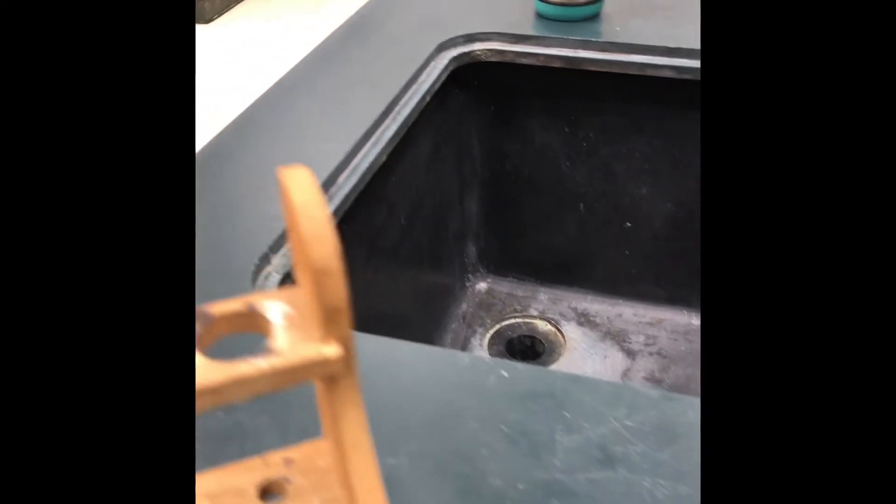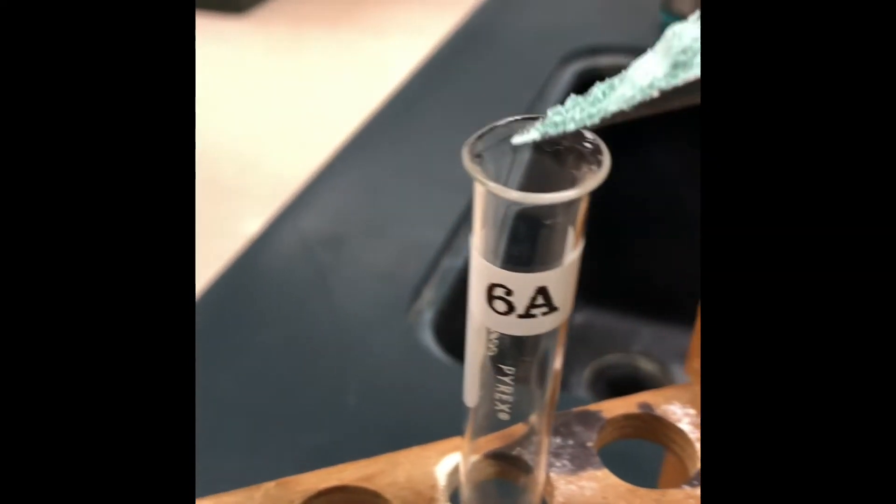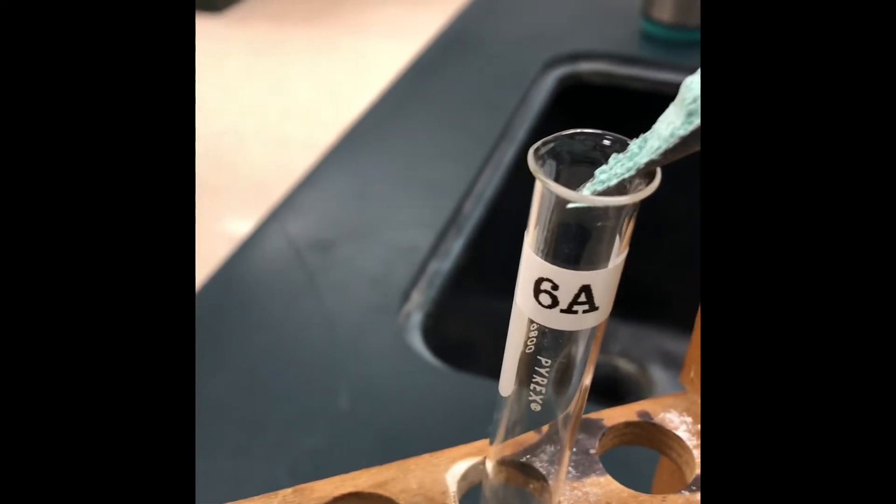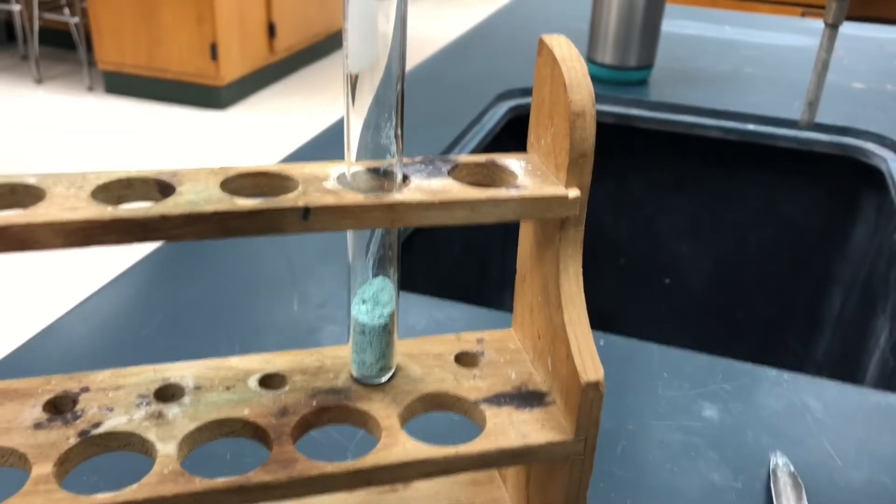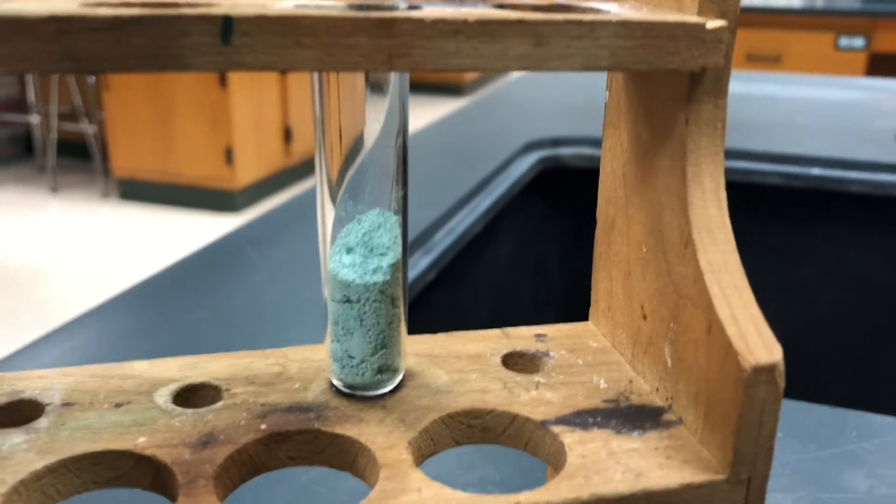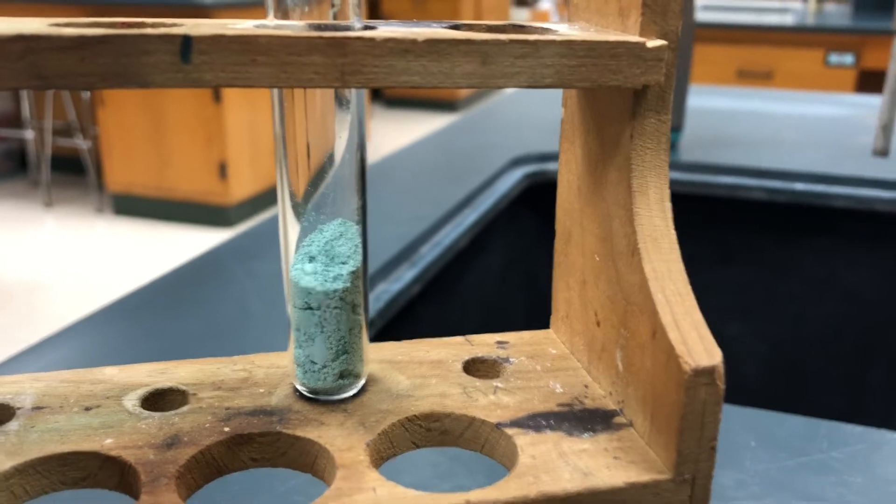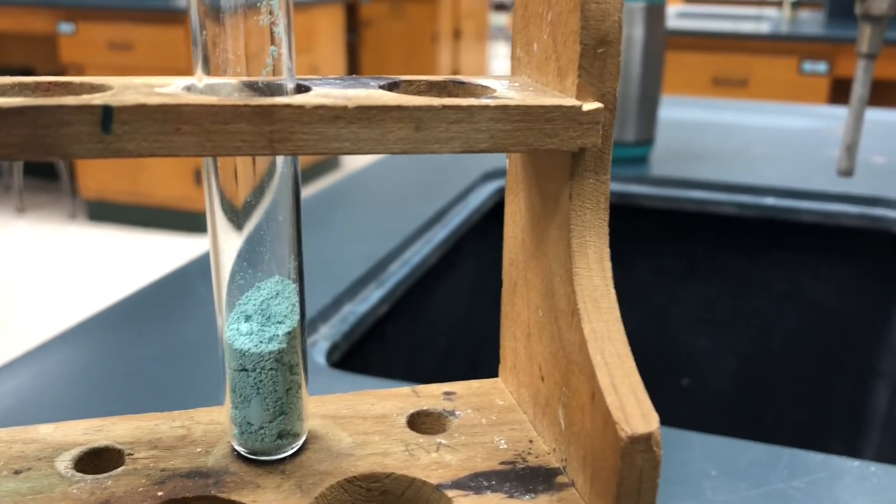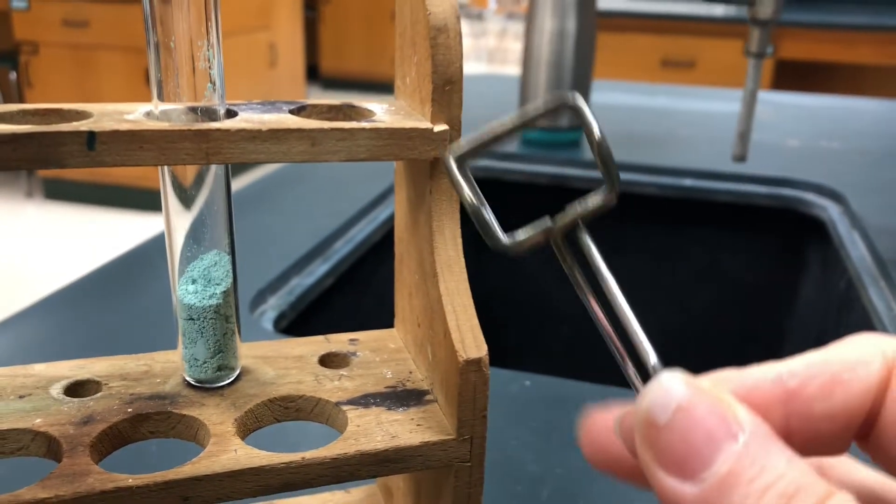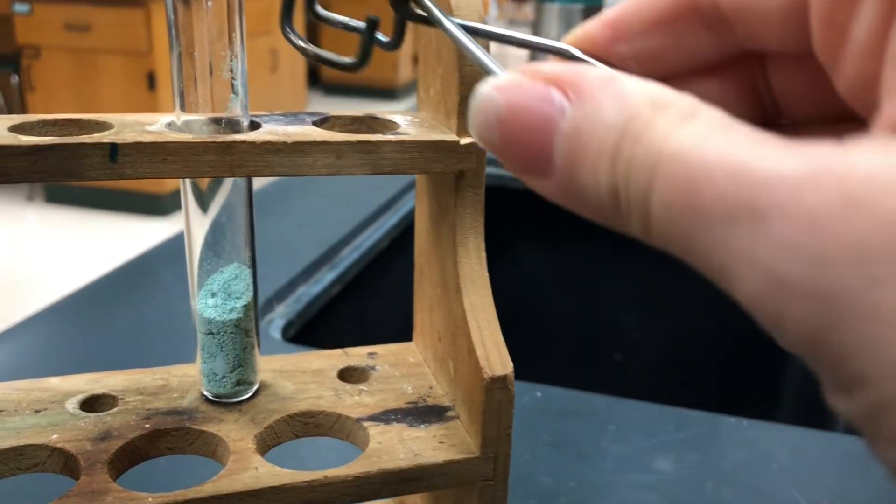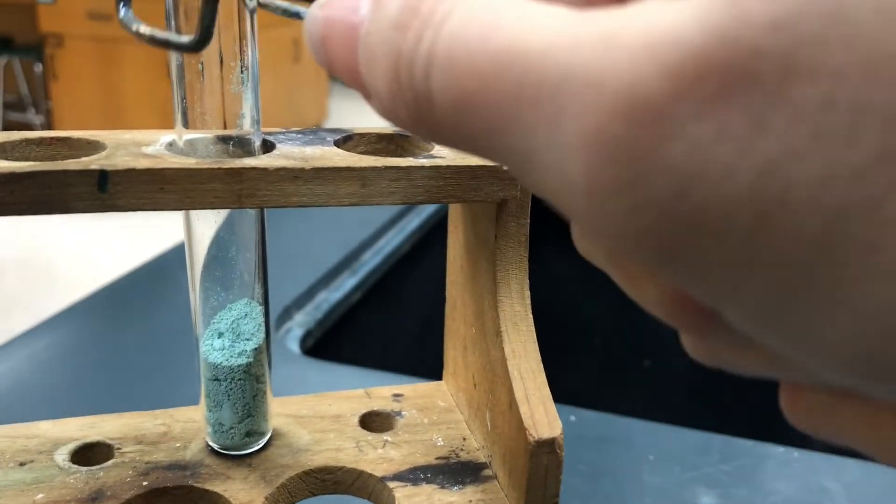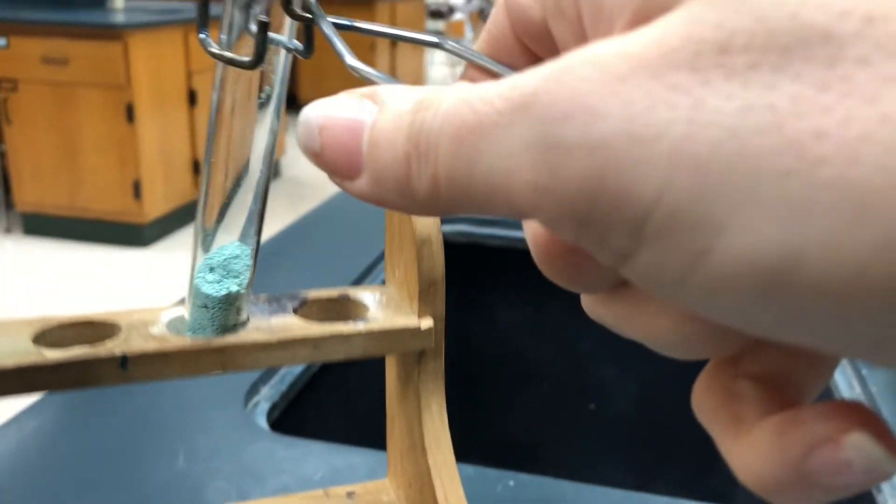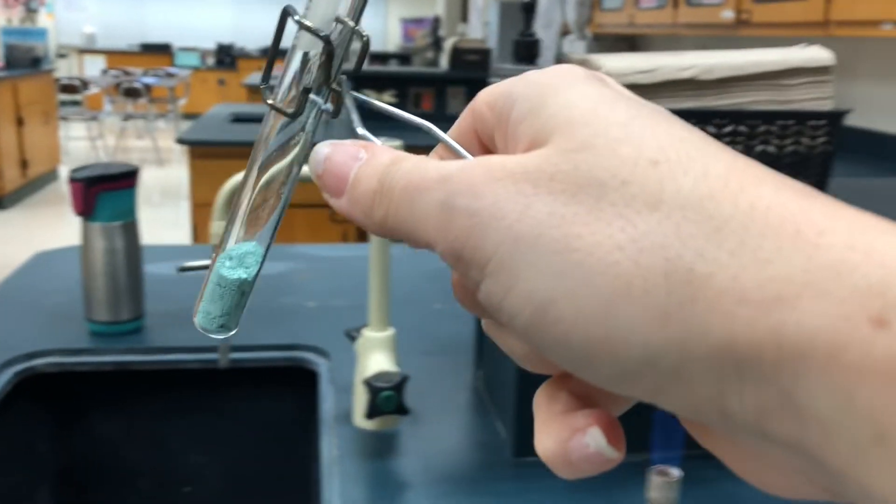I'm going to take a scoopula of this compound and put it inside my test tube. You can see that I have a couple scoops of that compound sitting there in the bottom of the test tube. Now I'm going to grab a piece of equipment called a test tube holder. I'm going to clamp that test tube into the holder and bring it over to my fire.